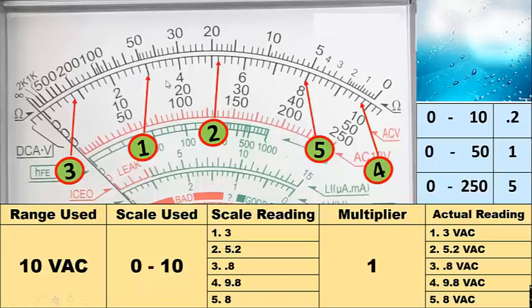For number 3, this is 0.2, 0.4, 0.6, 0.8. For number 4, this is 8, 8.2, 8.4, 8.6, 8.8, 9, 9.2, 9.4, 9.6, 9.8. Number 5 is 8. Multiply by 1: 1 times 3 equals 3 volts AC; 5.2 times 1 equals 5.2 volts AC; number 3 is 0.8 volts AC; number 4 is 9.8 volts AC; number 5 is 8 times 1 equals 8 volts AC.